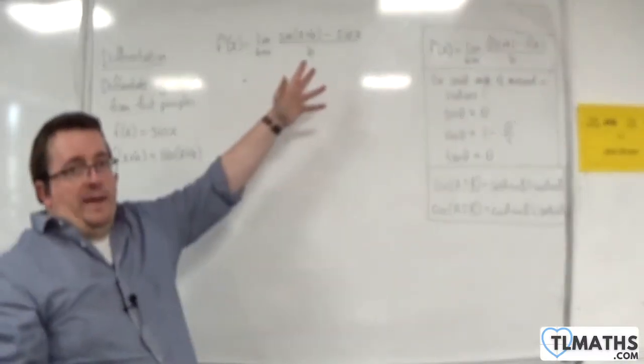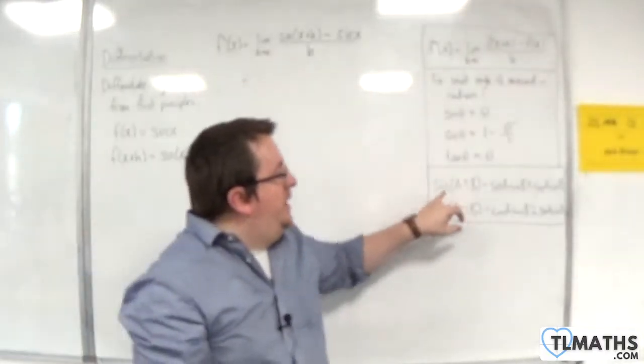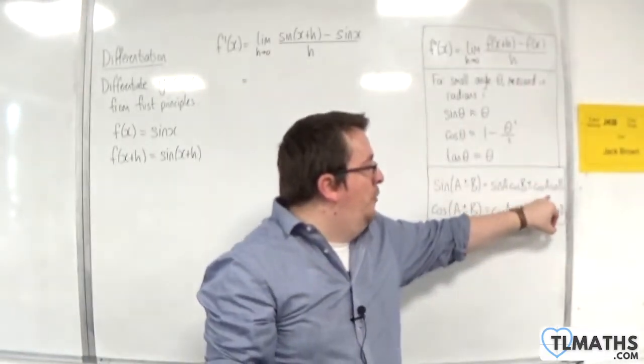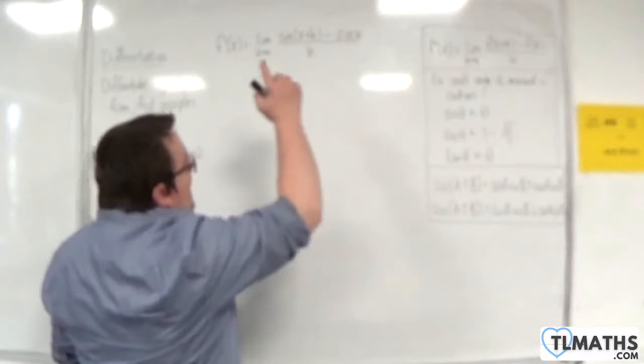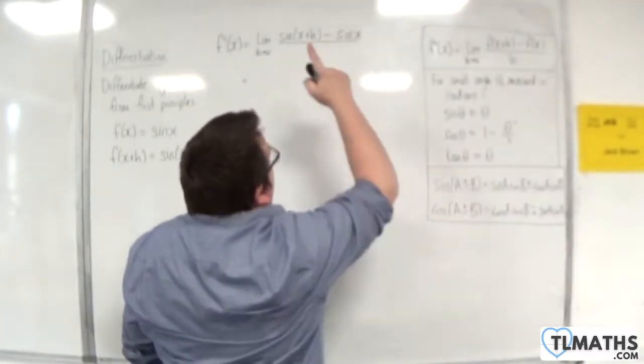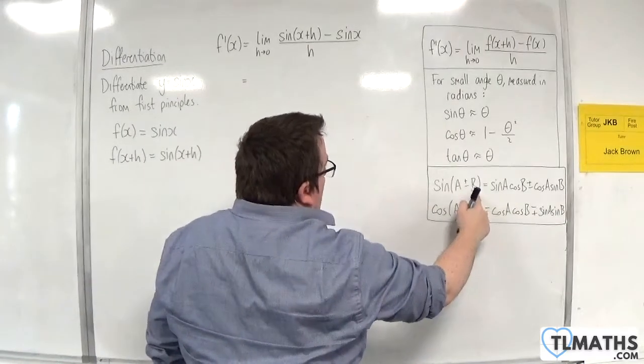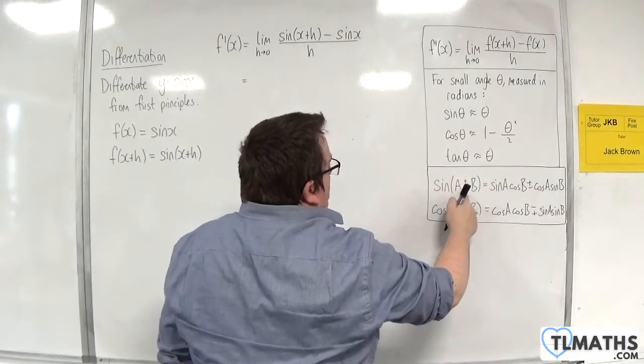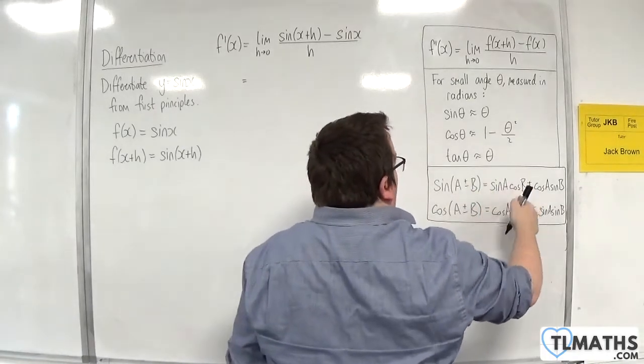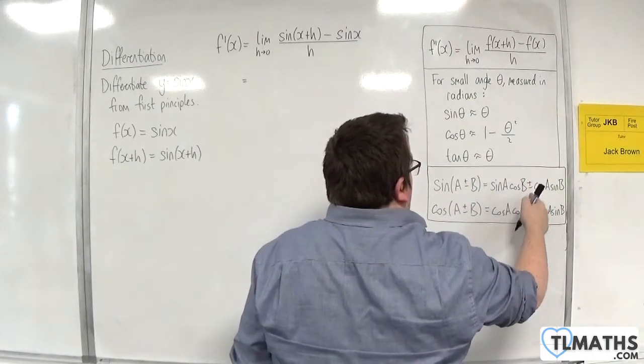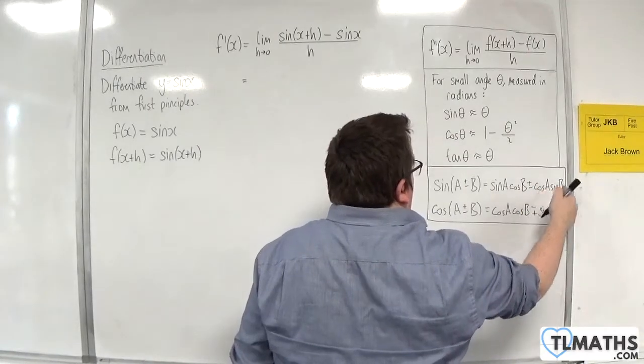Now the sin of x plus h, we can rewrite using the compound angle formula. So here the x is the A, the h is the B, and we've got a plus in between. So we're going to have sin x cos h plus cos x sin h.